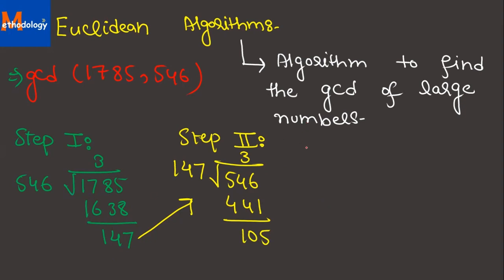Step 3: we repeat the process which we did in step number 2. We will divide the divisor of step 2 which is 147 by remainder of step 2 which is 105, and we get 42 as remainder. When we have remainder 0, this process will stop.